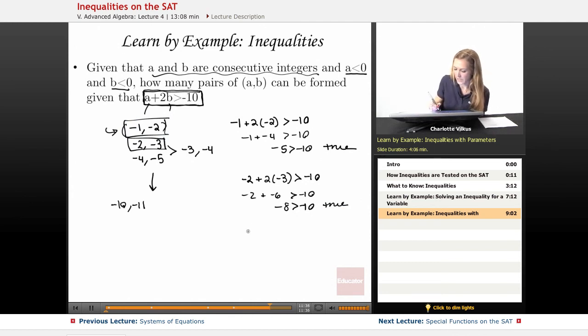Now we'll look at the next one. So negative 3, negative 4. And here, negative 3 plus 2 times negative 4 is actually going to give me a number that's less than negative 10, because we're going to get negative 11.